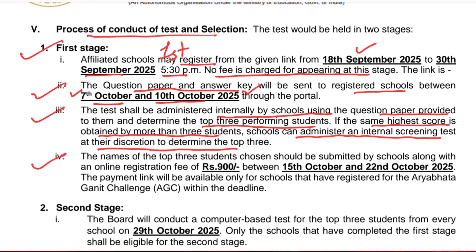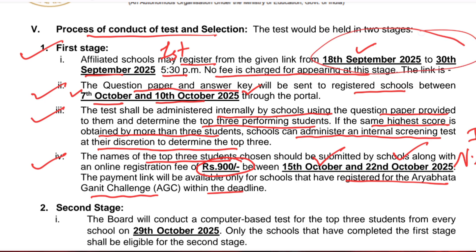The names of the top three students chosen by the school, along with a registration fee of 900 rupees per school, must be submitted between 15th to 22nd October. This is the registration for Stage 2, the national level. The payment link will be available only for schools that have registered for the Aryabhatta Ganit Challenge within the deadline of 18th to 30th September.